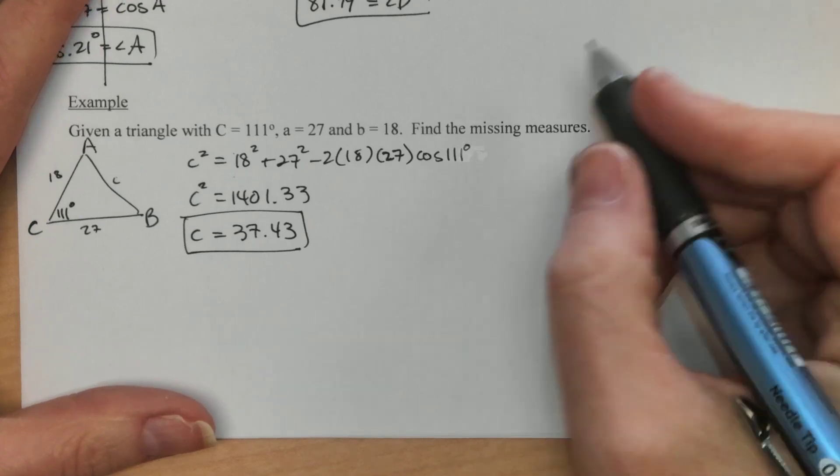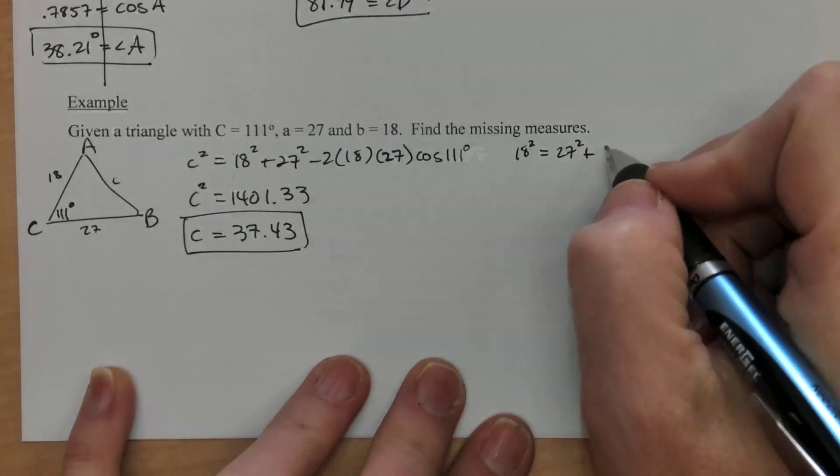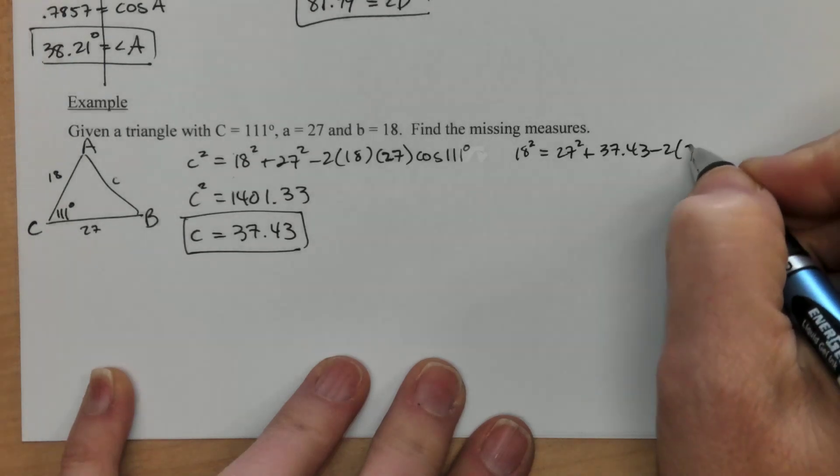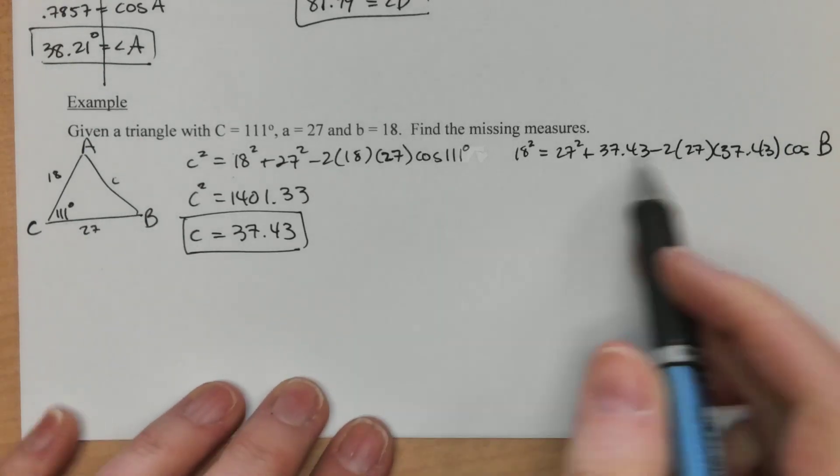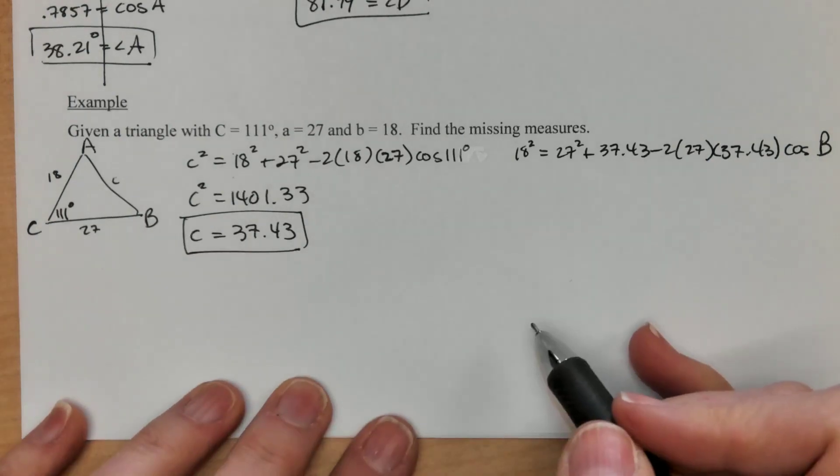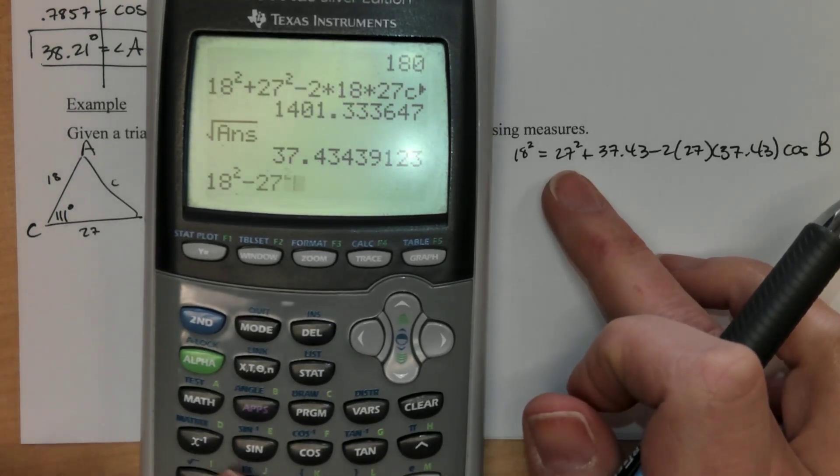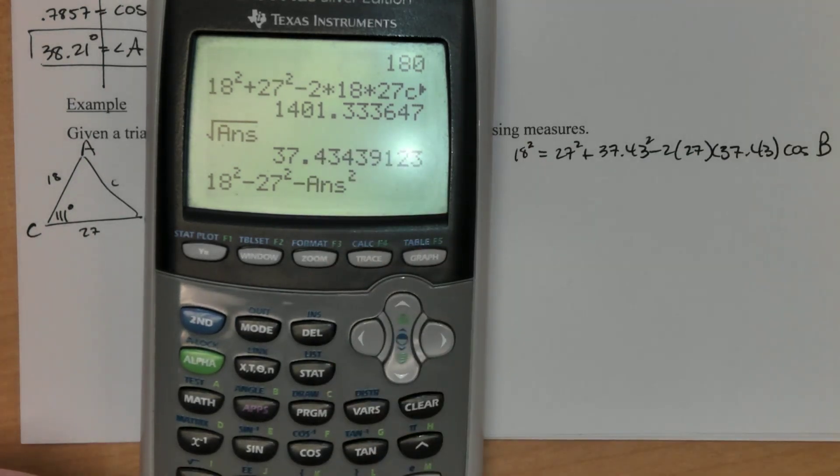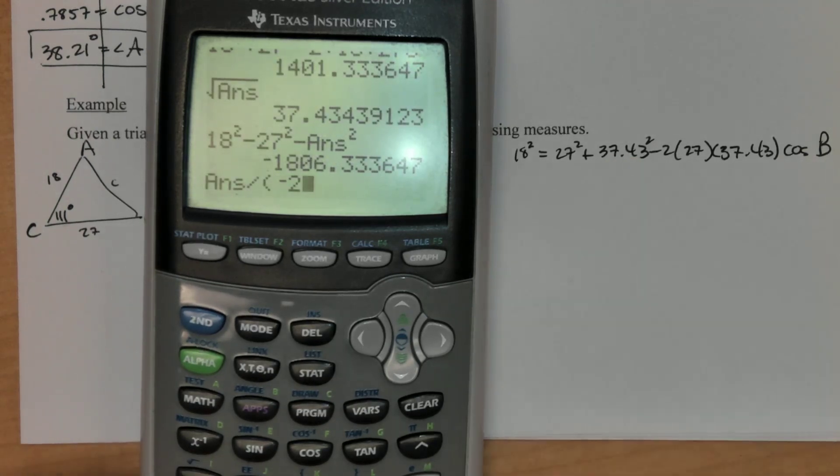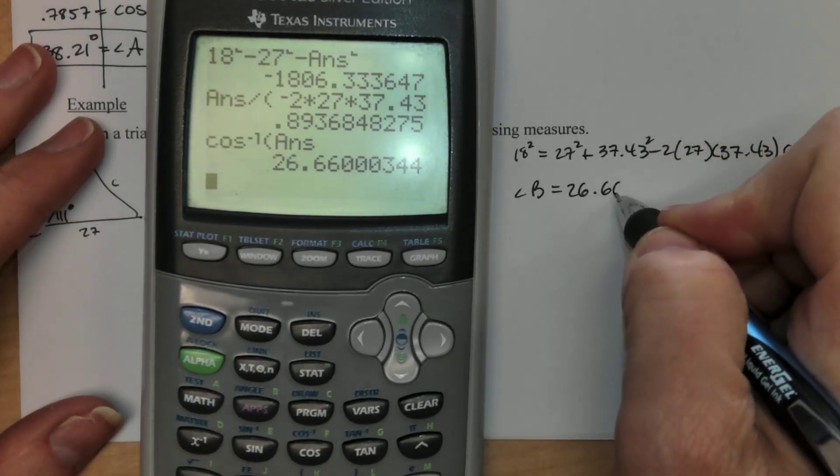Now we just have two more measures to find, angle B and angle A. So I'm going to set it for angle B. So that means 18² = 27² + 37.43² - 2(27)(37.43)cos B. I'm going to take my 18², subtract the 27², and subtract that 37.43². Then we're going to divide by -2(27)(37.43). When I cosine inverse that, I found out that my angle B is about 26.66°.